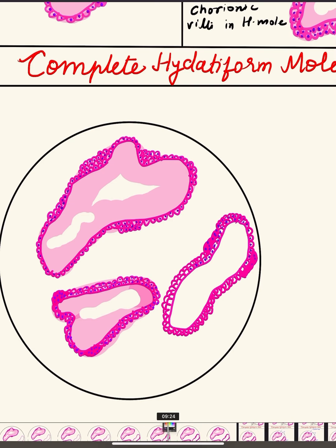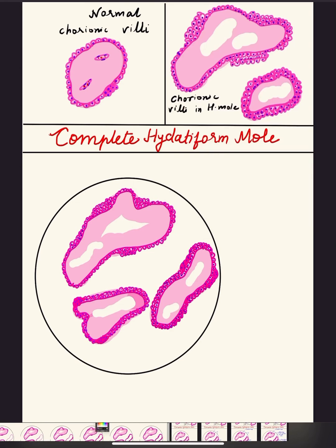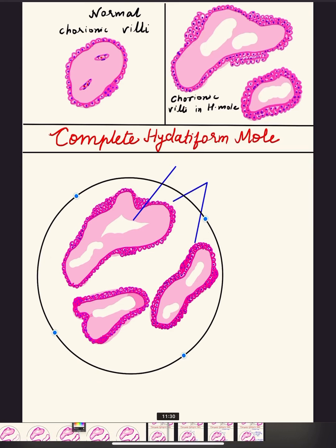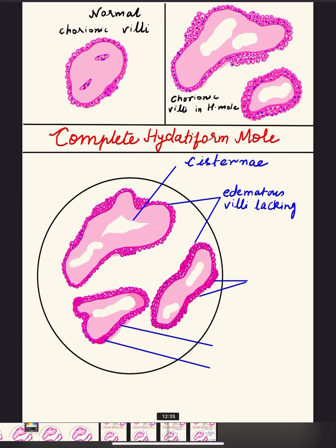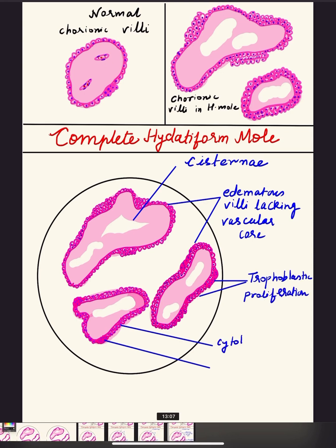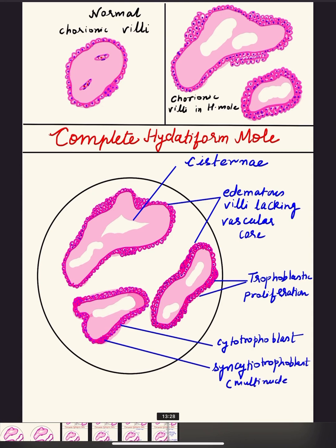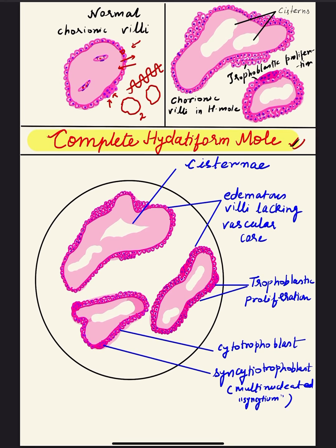For the third villus, we again draw proliferation of cytotrophoblast and syncytiotrophoblast pink masses, completing all the villi. For labeling, we label the cistern, the enlarged edematous villi lacking vascular core — no single vessel is drawn in any villus — then the areas of trophoblastic proliferation including syncytiotrophoblast, which are multinucleated without any demarcation of cell boundary. This completes the diagram of complete hydatidiform mole. Any queries can be posted in the comments — thank you.